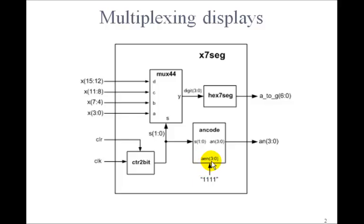If aEnable 3 down to 0 is 1, 1, 1, 1, then all digits will be enabled. That is, when we display hex 1, 2, 3, 4, they'll all be on. If we want to turn one of the digits off, we will just put a 0 in the corresponding digit position here. So we can make any of the digits that we want to be disabled.